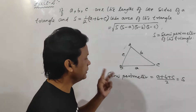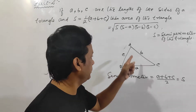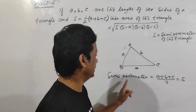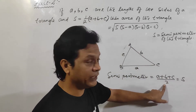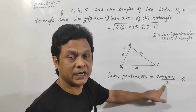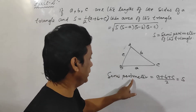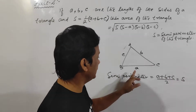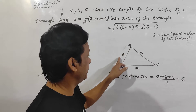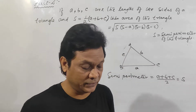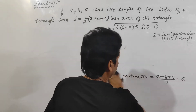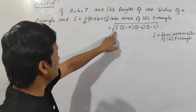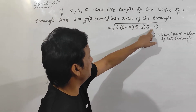So here, what is the meaning of perimeter? Perimeter means sum of the three sides: a plus b plus c. That is the perimeter, and divided by 2 means half of the perimeter — that means semi-perimeter — and it is denoted by s. So if the three sides are given, your formula is: Area equals square root of s into (s minus a) into (s minus b) into (s minus c).